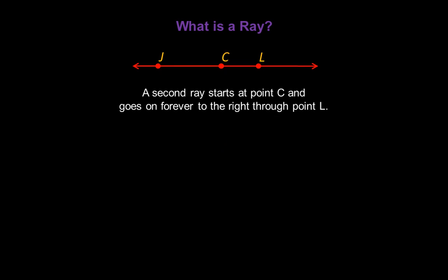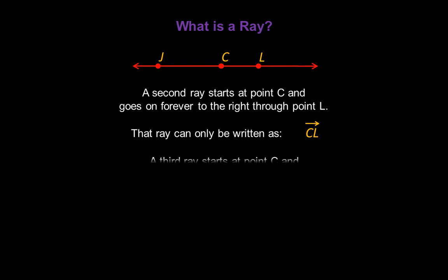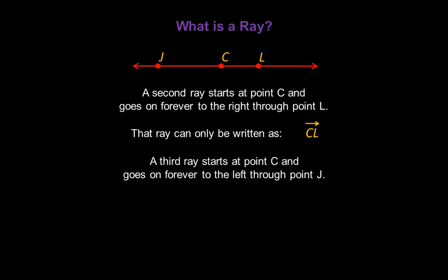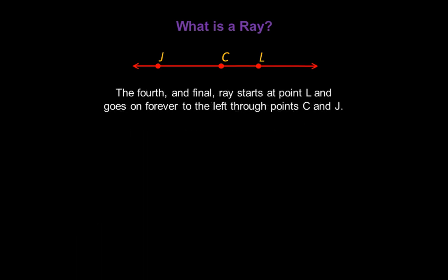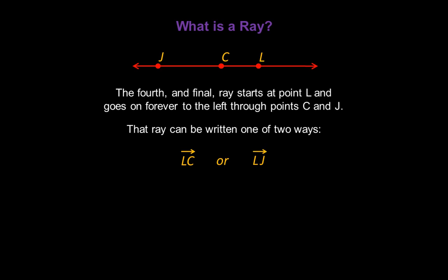A second ray starts at point C and it goes on forever to the right through point L. So that ray can only be written as CL with the ray symbol above it. A third ray starts at point C and goes on forever to the left through point J. That ray can only be written as CJ with the ray symbol above it. For ray CJ, notice the arrow in our notation still points to the right, even though our ray goes off to the left on the line above. The fourth and final ray starts at point L and goes on forever to the left through points C and J. That ray can be written as LC or LJ, each with the ray symbol above it.